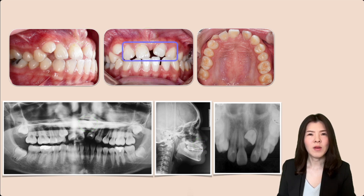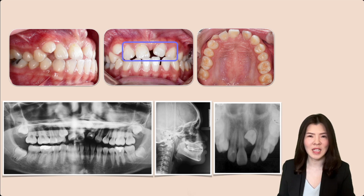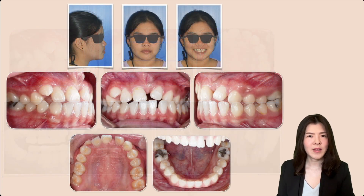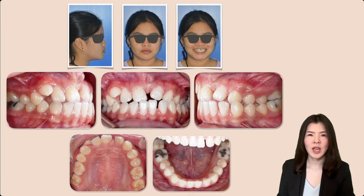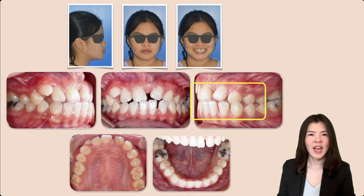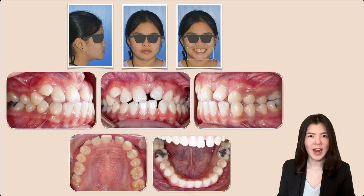Moreover, both adjacent teeth were tipped toward the midline and occupied the space for the maxillary left central incisor. Besides the impacted tooth, there were four other main problems, consisting of anterior and left posterior crossbite, edge-to-edge overbite, low smile line, and a skeletal Class 3 discrepancy.